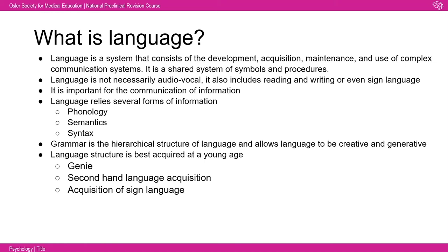Language relies on several forms of information to be communicated, including phonology, semantics, and syntax. Grammar is particularly interesting because it's the hierarchical structure of language — it allows language to be creative and generative, something animals don't have. Although animals can communicate, for example the waggle dance of bees indicating where good nectar is, it doesn't allow creativity or generativity, which is why there are no animal models of language.